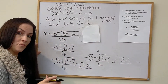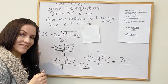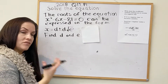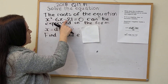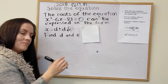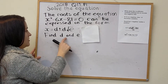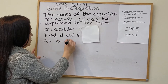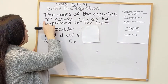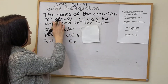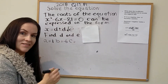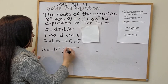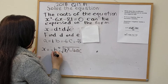These questions are normally worth about 4 marks. This next example is from the 2018 paper, paper 1 — it's quite hard and combines a little bit of surds as well. We're told the roots of x squared minus 6x minus 81 equals 0 can be expressed in the form x equals d plus or minus d root e. Find the values of d and e. We start the same way: a is 1, b is minus 6, and c is minus 81.